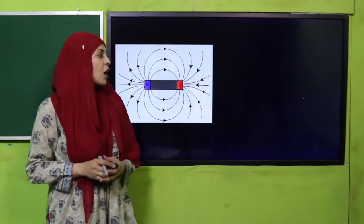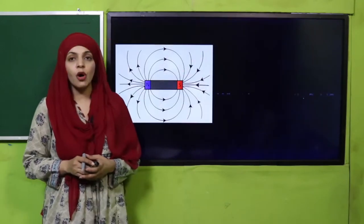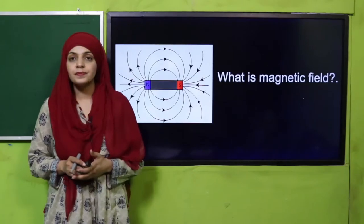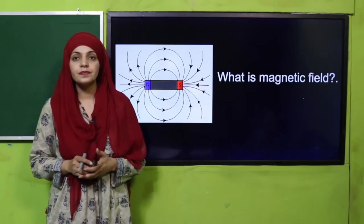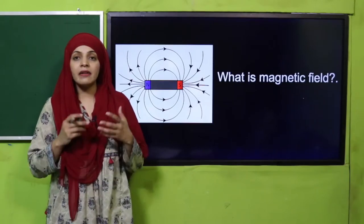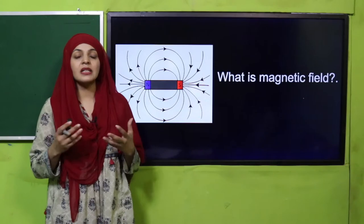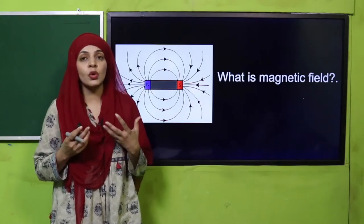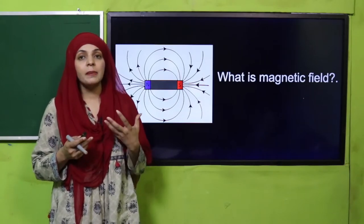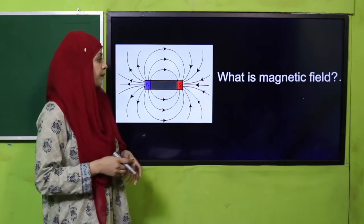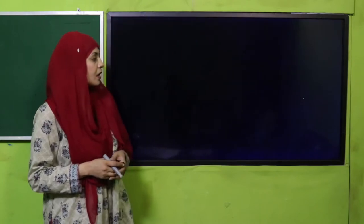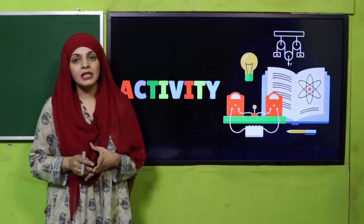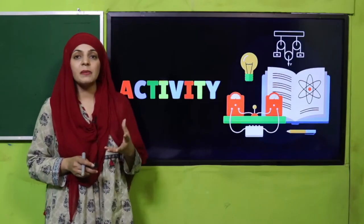Now let's quickly move forward. What is magnetic field? The area around the magnet where magnetism is detected is known as the magnetic field. Now it's time for an activity.